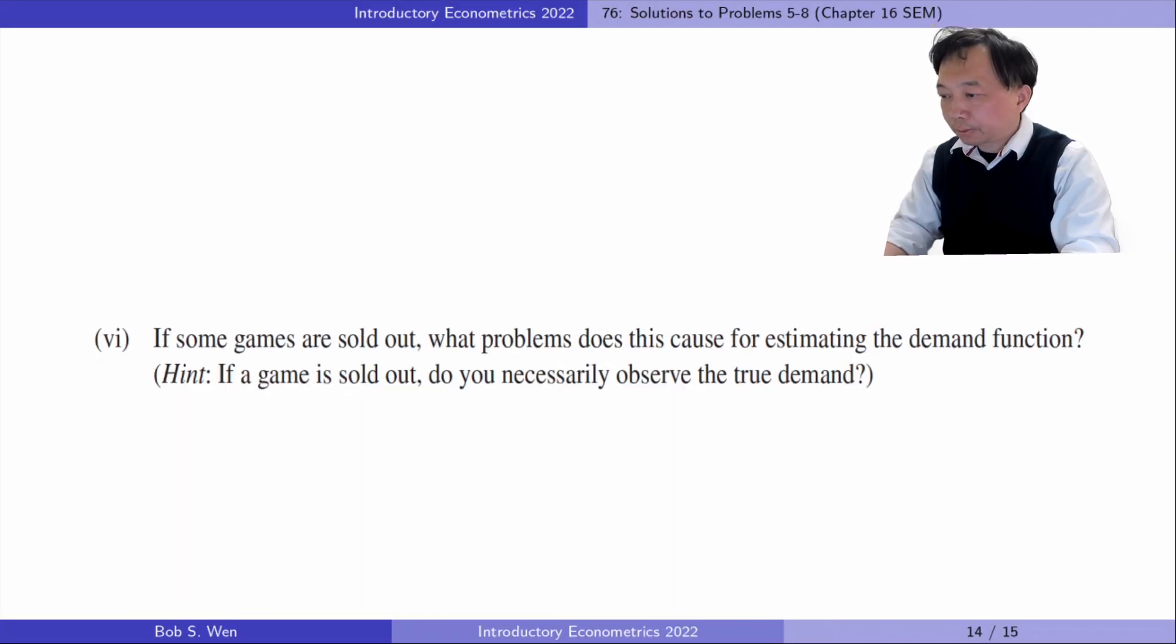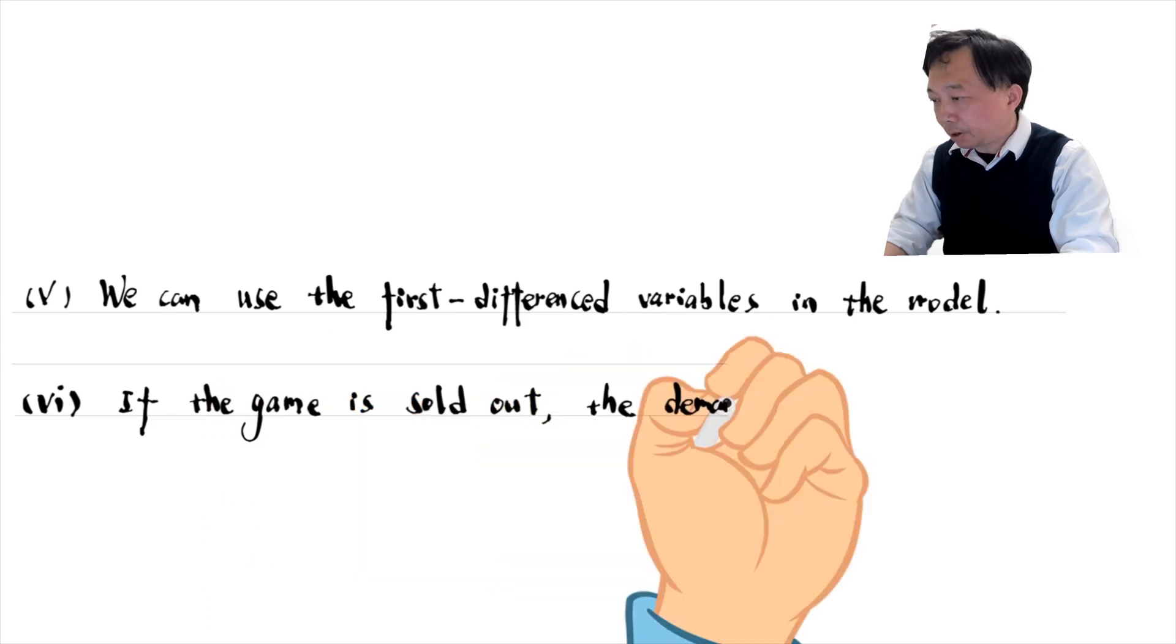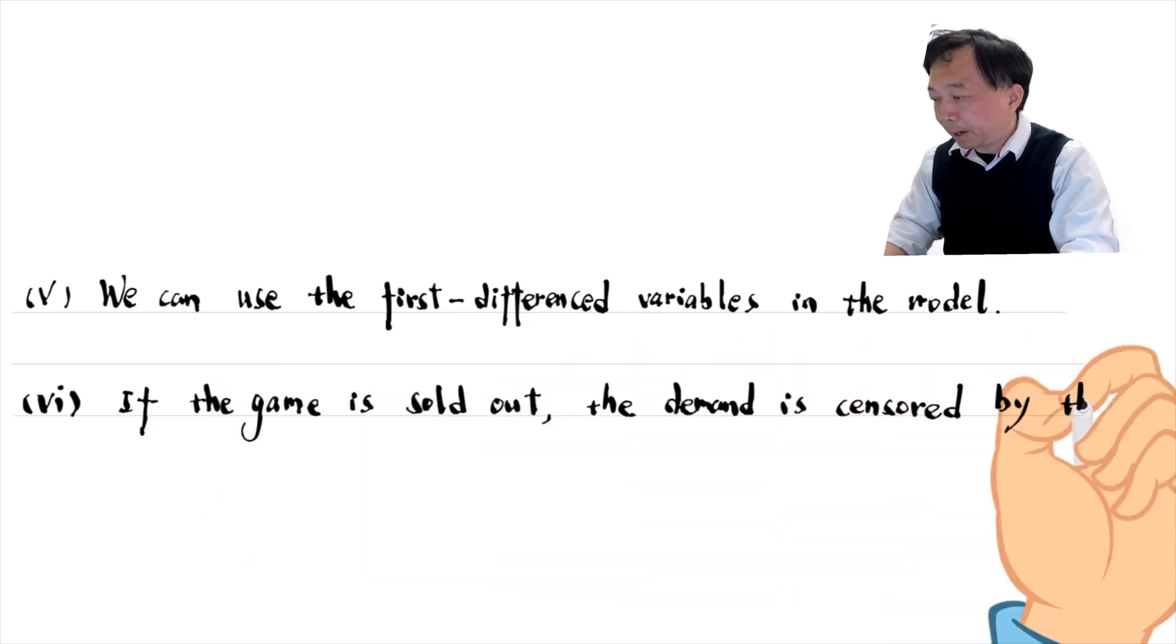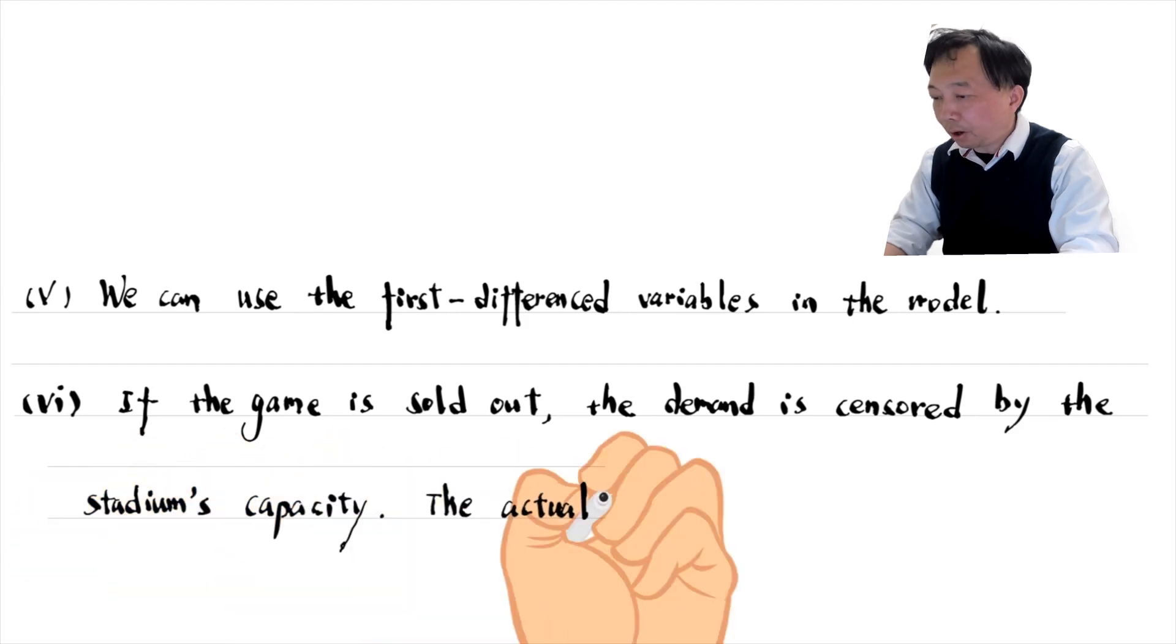In part six, if some games are sold out, what problems does this cause for estimating the demand function? If the game is sold out, the demand is censored by the stadium's capacity. The actual demand is not observed.